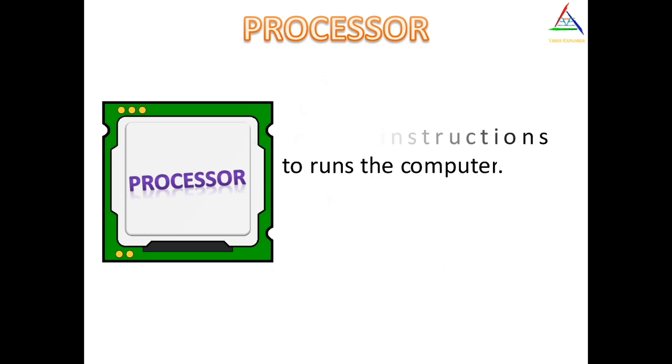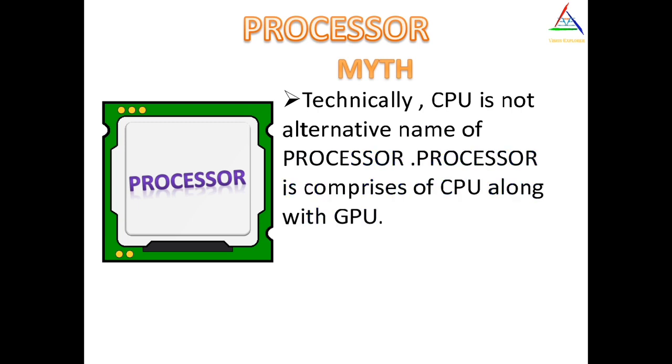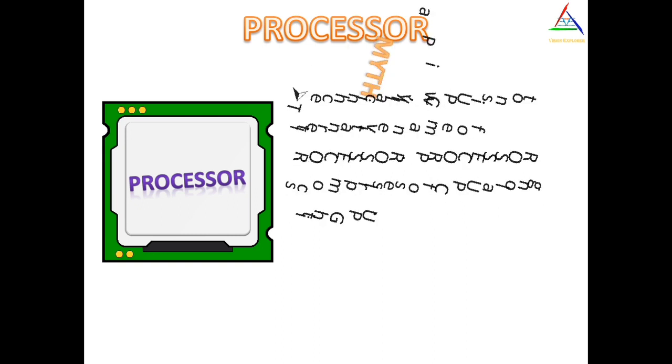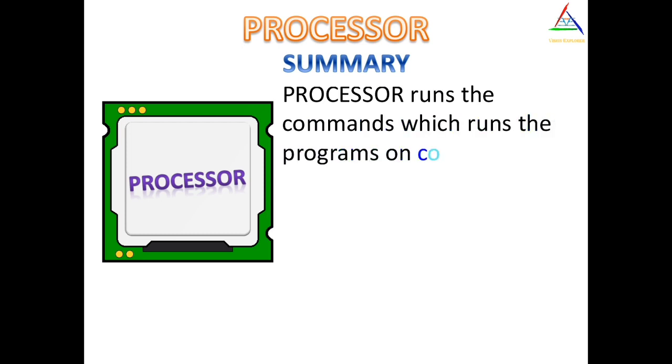Commonly processor and CPU are interchangeable, but that's not true. Because CPU is a part of processor, and in addition to CPU, GPU is also there. So to summarize, processor runs the commands which run the programs on a computer.